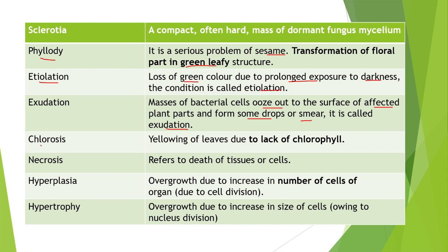Next is chlorosis: the yellowing of leaves due to the lack of chlorophyll is known as chlorosis. Next term is necrosis: it refers to the death of tissues or cells. Next term is hyperplasia: the overgrowth due to an increase in the number of cells is known as hyperplasia, occurring due to cell division.